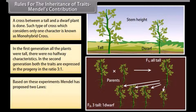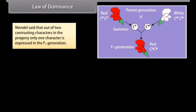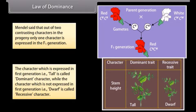Based on these experiments, Mendel proposed two laws: the Law of Dominance and the Law of Segregation. Law of Dominance: Mendel said that out of two contrasting characters in the progeny, only one character is expressed in the F1 generation. The character which is expressed in the first generation — that is tall — is called the dominant character, while the character not expressed — that is dwarf — is called the recessive character.